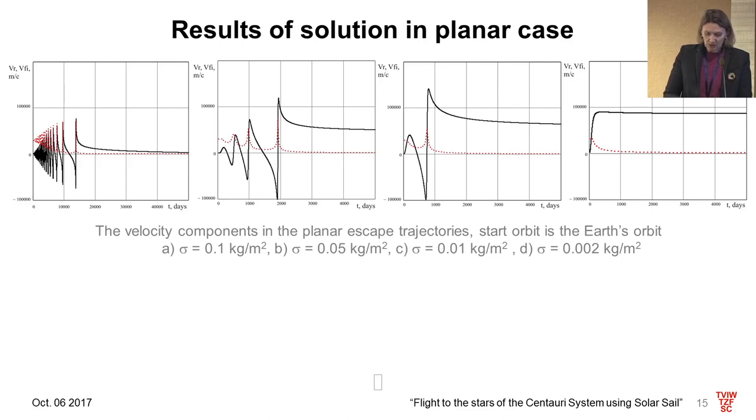These figures show the change of velocity components during the initial stage of movement. The data of this slide shows that the velocity on the part of the trajectory close to the sun exceeds 130 kilometers per second, which shows the need to consider the post-Newtonian effects in the motion simulation. We can see that the escape velocity increases if the mass per area parameter decreases.